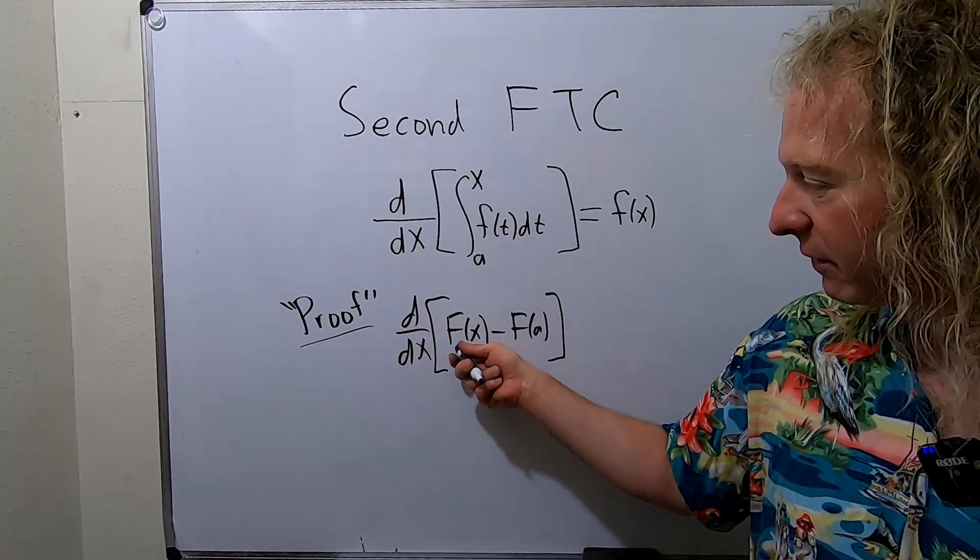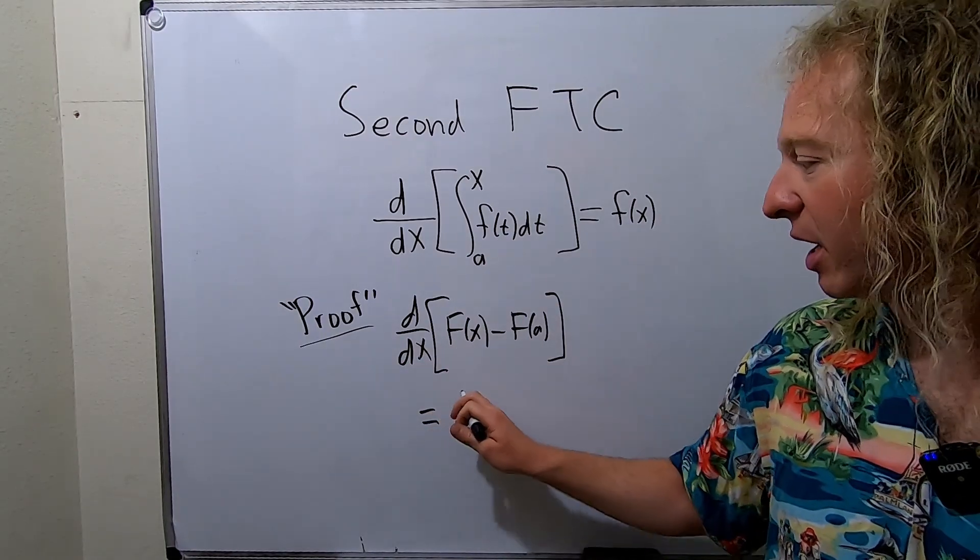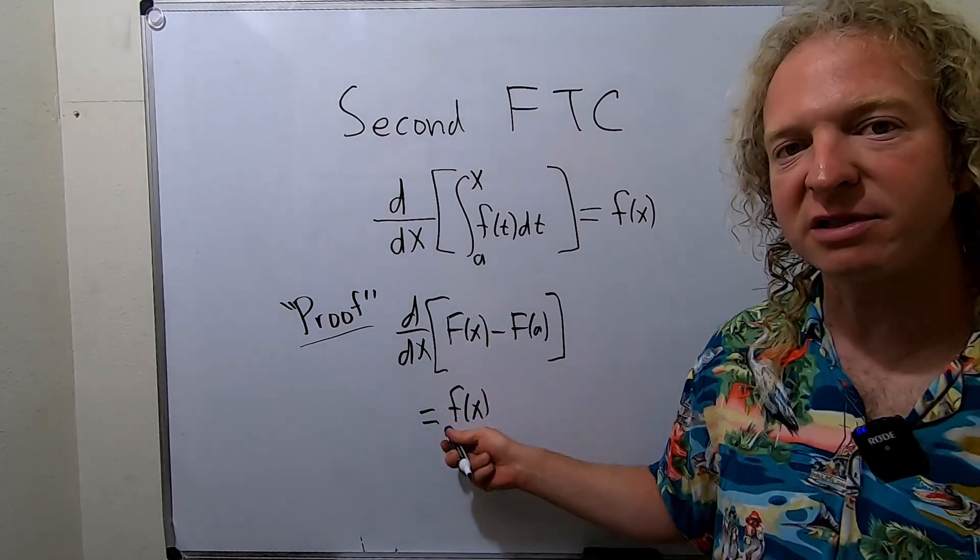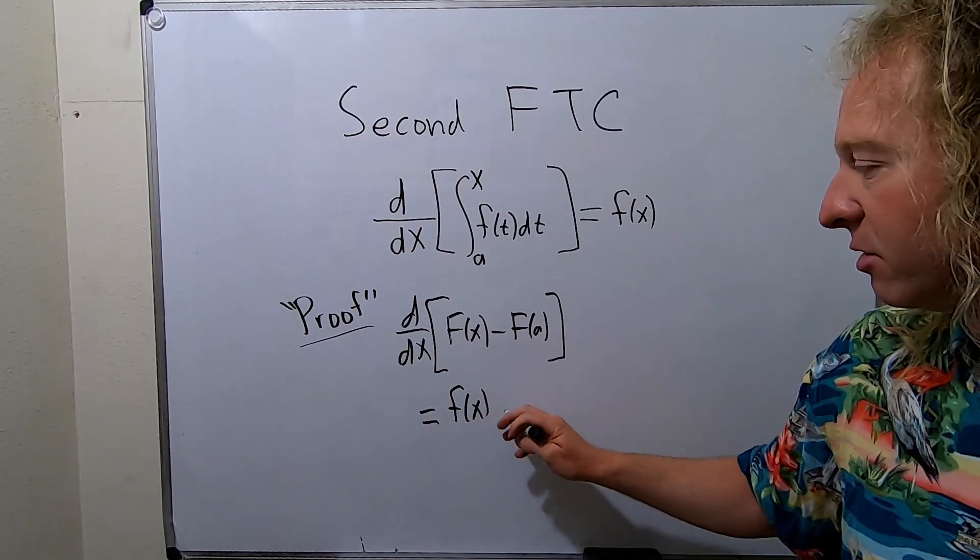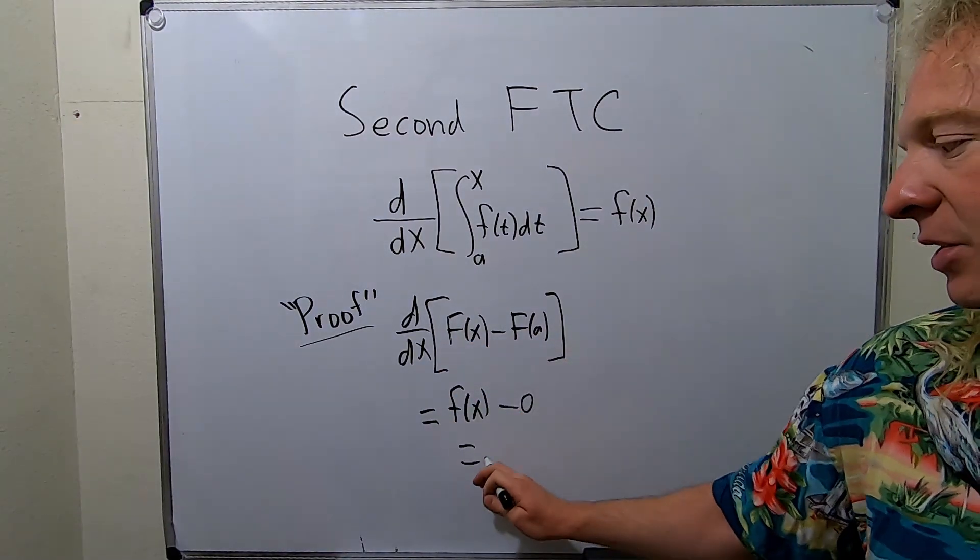In fact, when you take the derivative of big F, you get little f. That's the definition, right? The derivative of big F is little f. This is a number, so it's just 0. So we just get f of x.